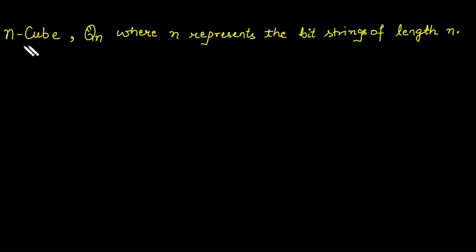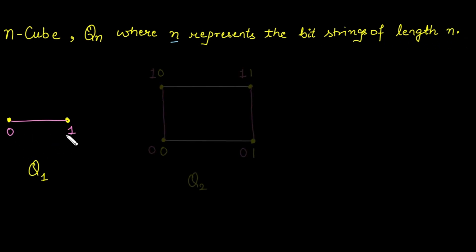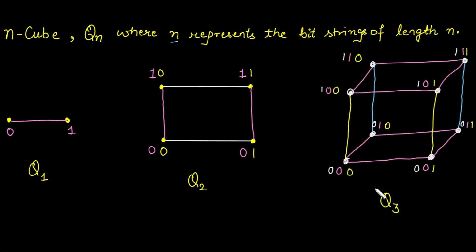The last case is the n-cube graph Qn, where n represents bit strings of length n. Q1 has 2 vertices (bit strings 0 and 1), Q2 has 4 vertices, and Q3 has 8 vertices. For Q1, the two vertices are adjacent so they need different colors — green and blue. The chromatic number of Q1 is 2.